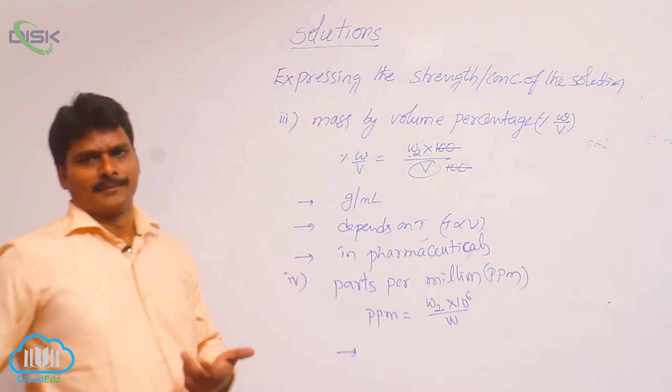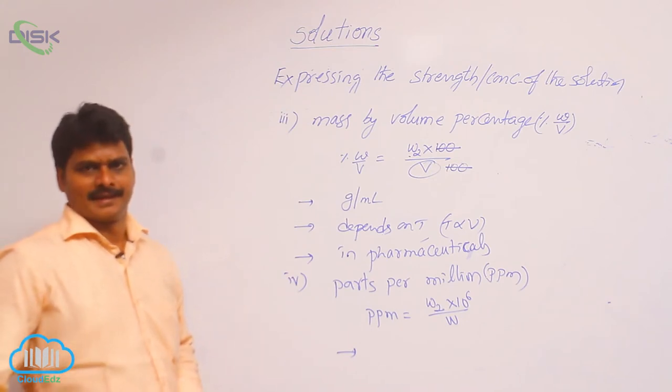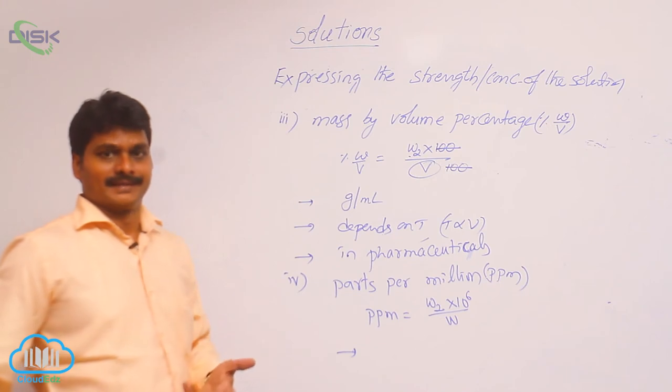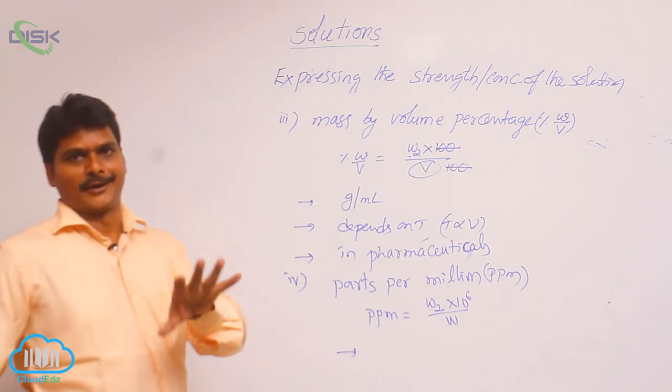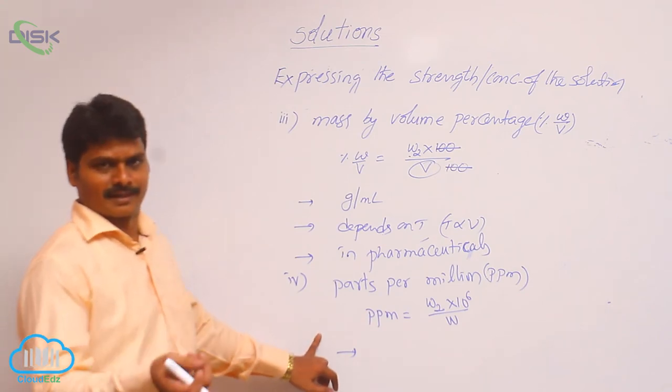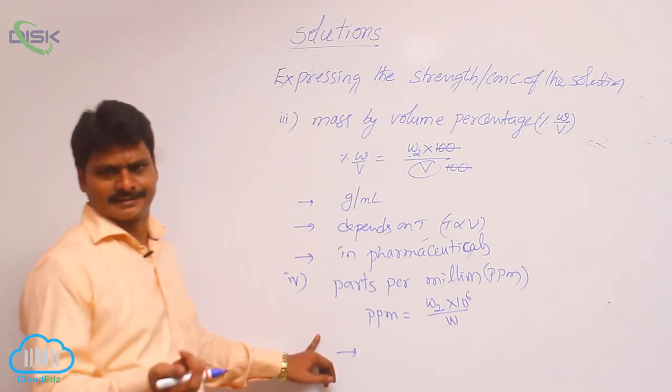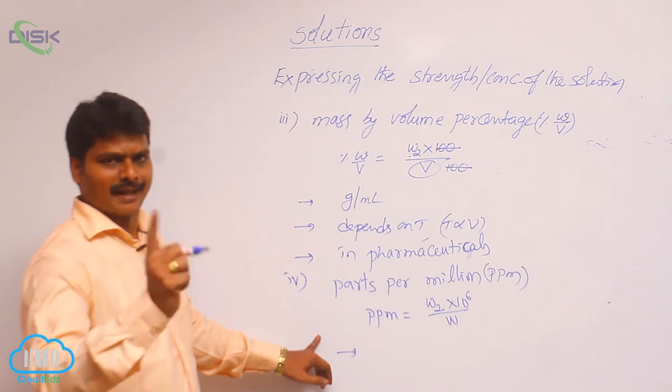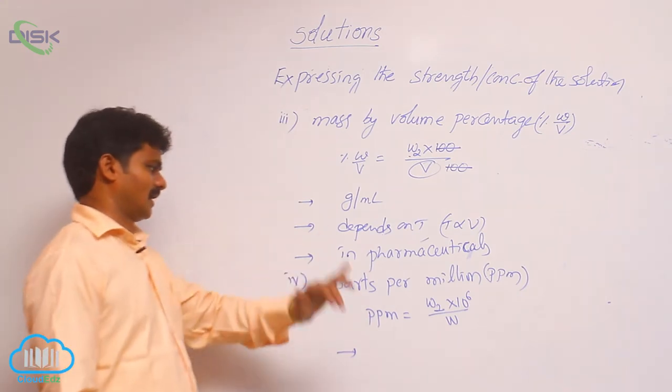If it is 1 ppm, that is acceptable level. If it crosses 1 ppm, that is polluted water and toxic water. So, for such trace amounts. Similarly, air pollutants, pollutants in air also expressed as parts per million.